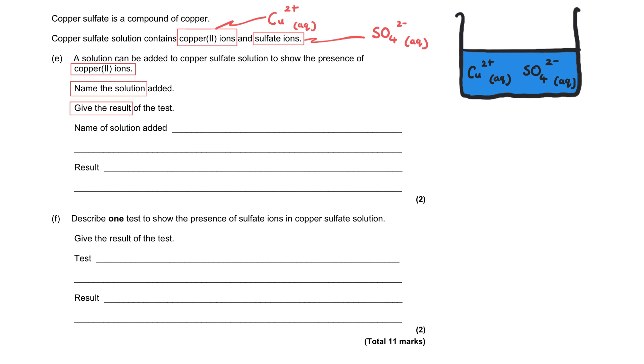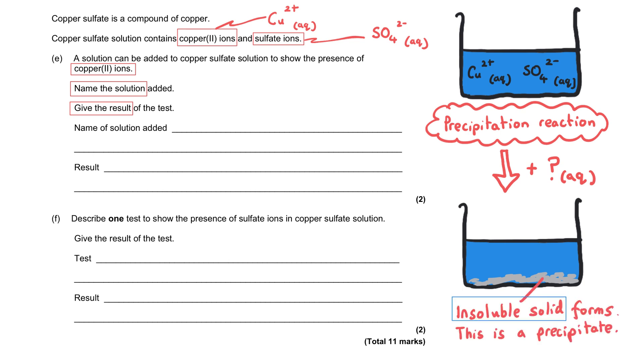This type of reaction is called a precipitation reaction. The ions that are present in copper sulfate are dissolved at the beginning, they are aqueous. Then we add something to that solution which results in an insoluble solid forming, and that insoluble solid is a precipitate.